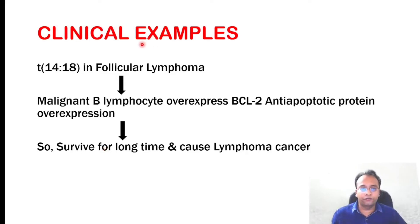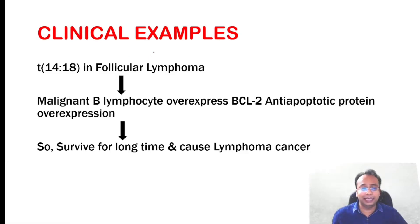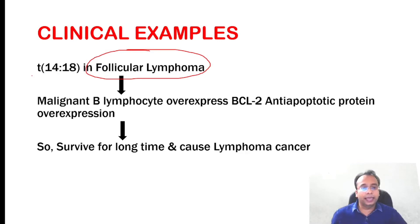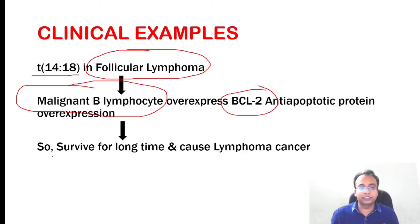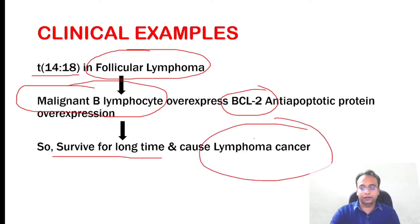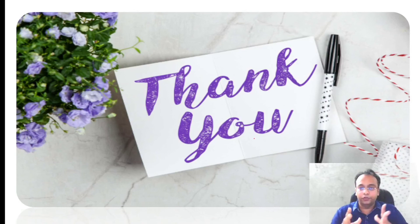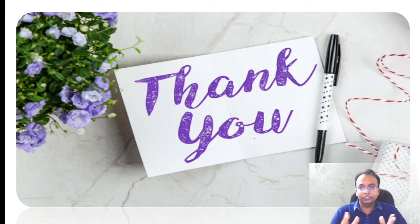A common clinical example of how tumor cells evade the apoptotic process is follicular lymphoma — a lymphoma, a lymphoid tumor. Here there is a chromosomal translocation of 14 to 18. Because of this translocation, the malignant B lymphocyte will overexpress BCL2, an anti-apoptotic protein. Since BCL2 is an anti-apoptotic protein, it prevents apoptosis, so the lymphoma cell will not die, survives for a long time, and causes lymphoma cancer. These are the four ways by which cancer cells evade apoptosis: overexpression of anti-apoptotic proteins, inactivation of p53, and overexpression of MDM2.